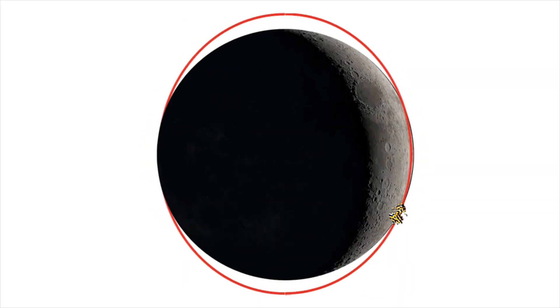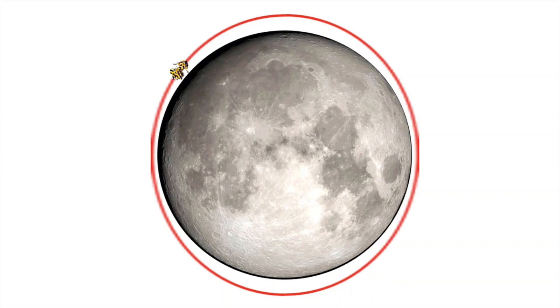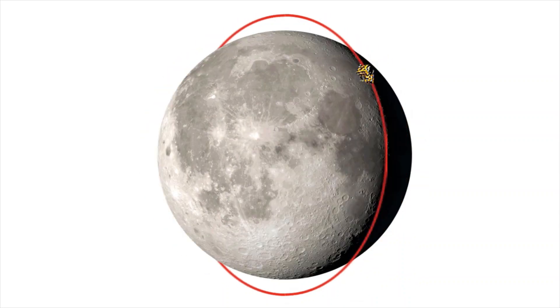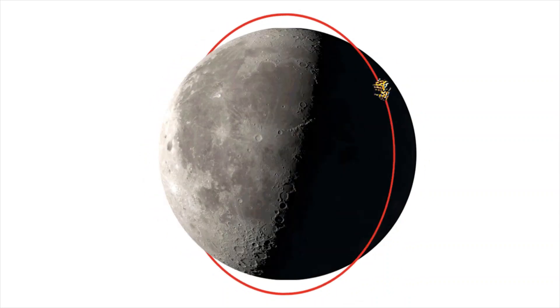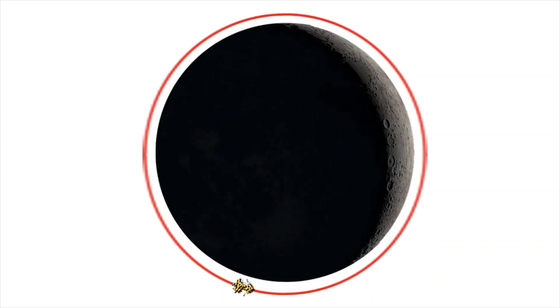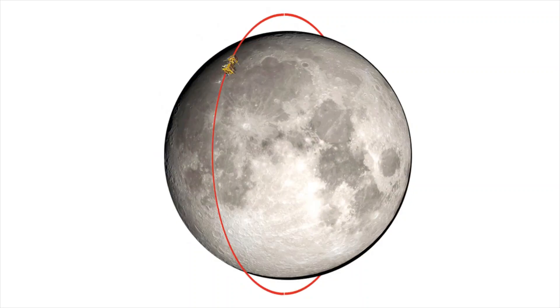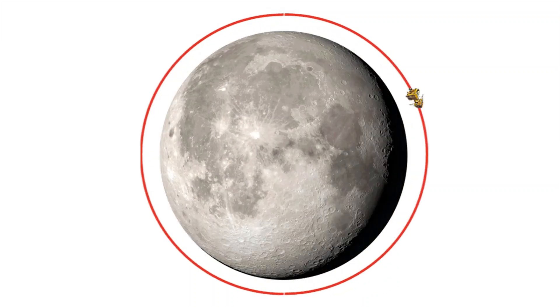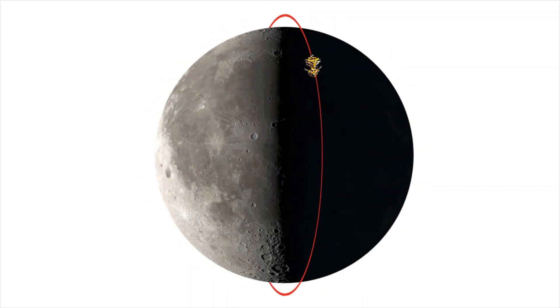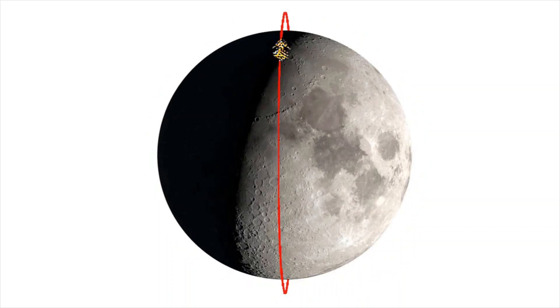Therefore, the lunar polar orbit appears to roll around the Moon in the clockwise direction when viewed from the Earth. The lunar polar orbit traverses all 360 degree longitudes once in 27.32 days.